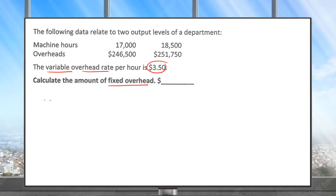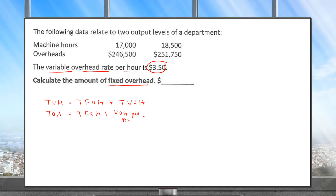They are asking us to calculate the amount of fixed overhead. We know that total overhead equals total fixed overhead plus total variable overhead. To elaborate further: total overhead equals total fixed overhead plus variable overhead per unit multiplied by the activity level.